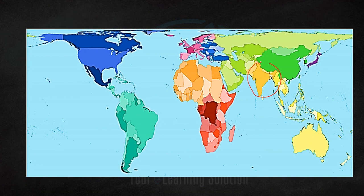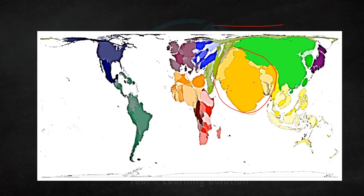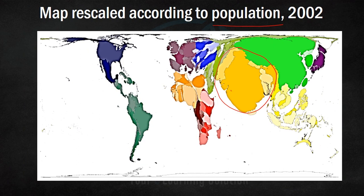In terms of geographical area, India is only a small size, but in terms of population it occupies a large area in terms of the world population. Similarly, Australia, which is actually quite big geographically, is very small here in terms of population proportion.